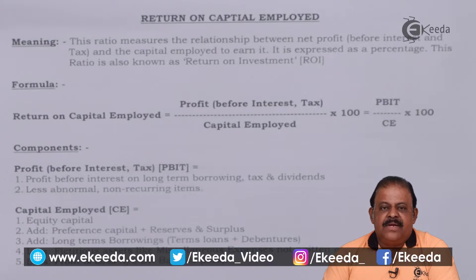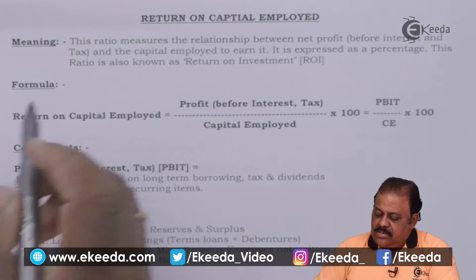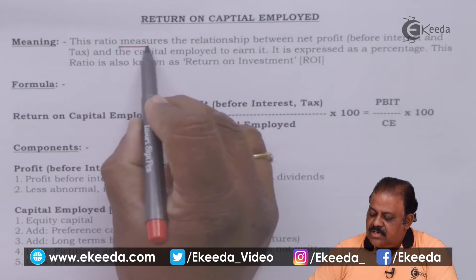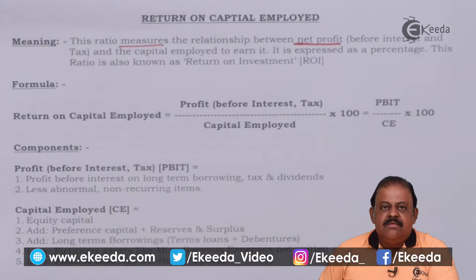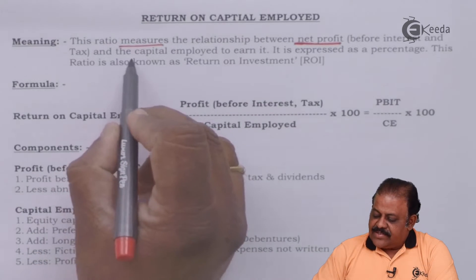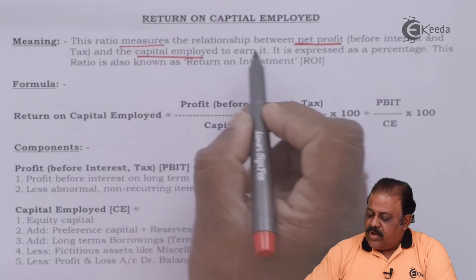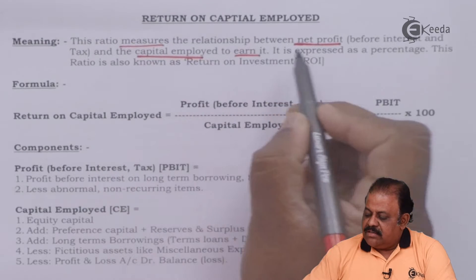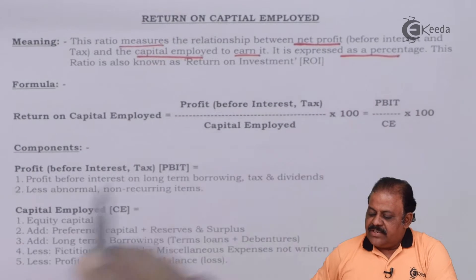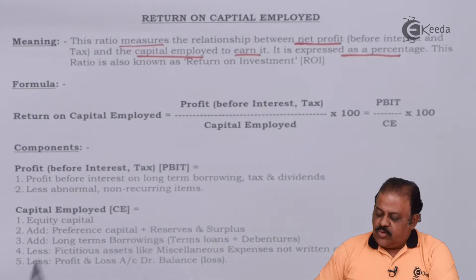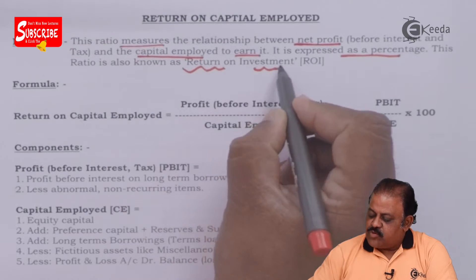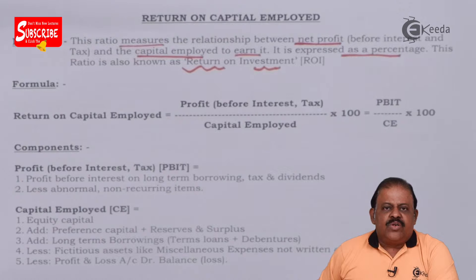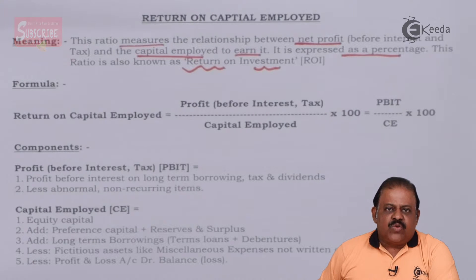Return on capital employed: this ratio measures the relationship between net profit before interest and tax and the capital employed to earn it. It is expressed as a percentage. This ratio is also known as return on investment, that is return on total investment or return on total resources.